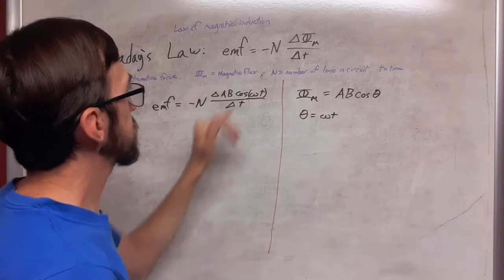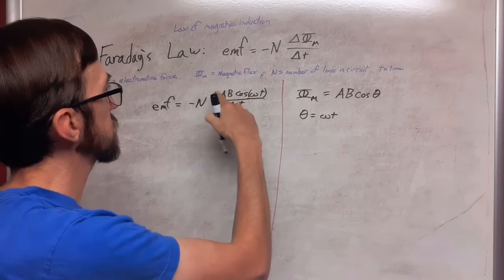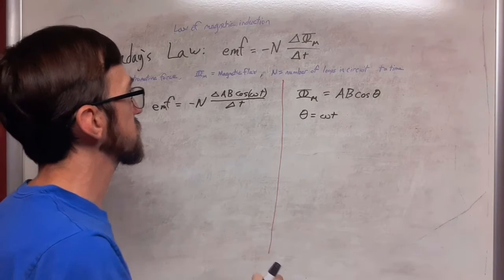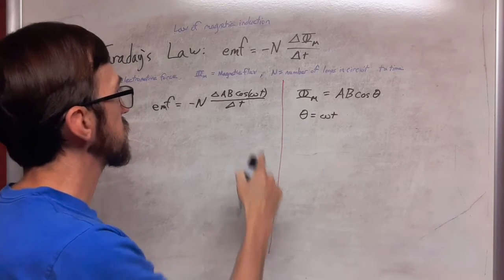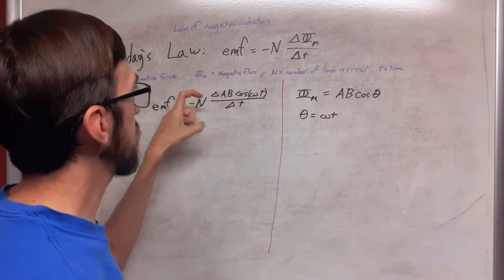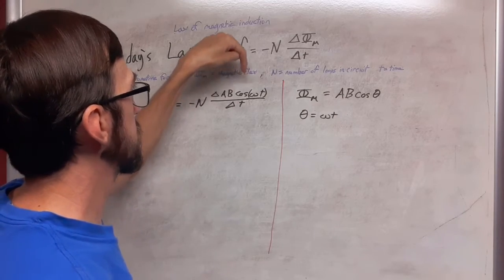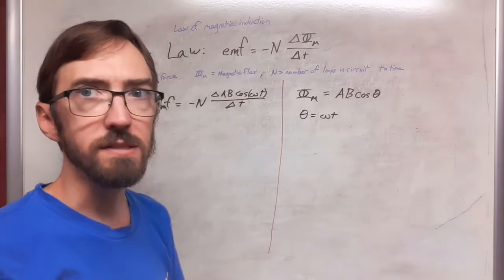And this in the numerator here is a continuous function. It's a cosine function and we just have this scalar multiplier on the outside. So we have continuous function here. We want to look at the derivative of AB cos omega t with respect to t.